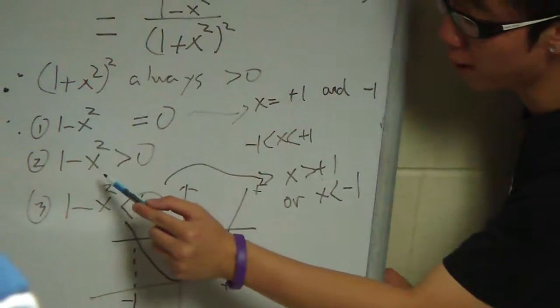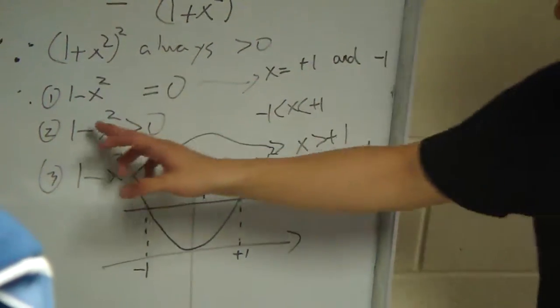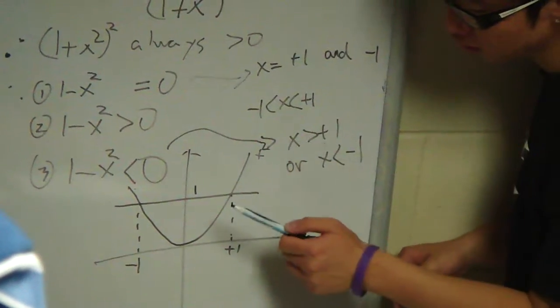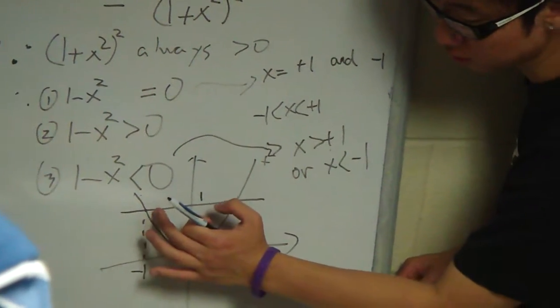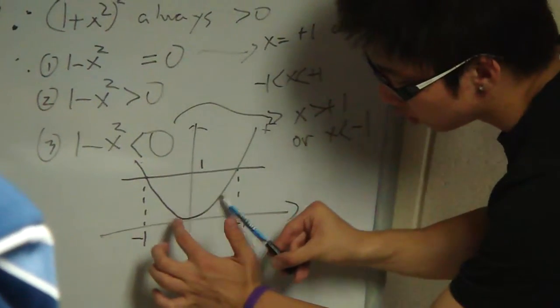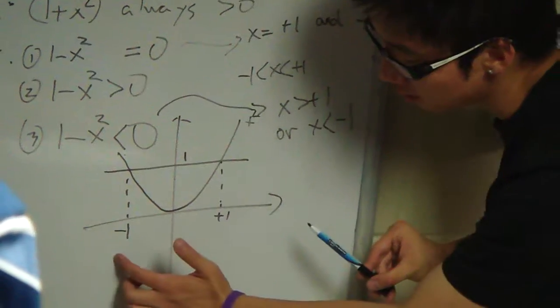When 1 - x² is greater than 0, which means 1 is always greater than x². We'll see the x² below y = 1, so it's basically inside this area, between positive 1 and negative 1.